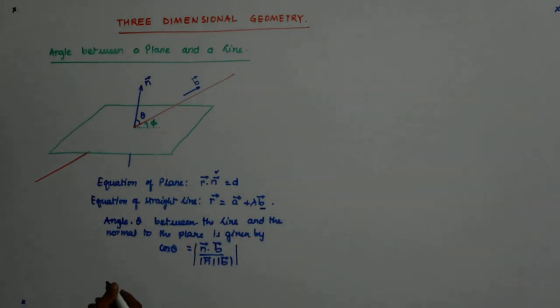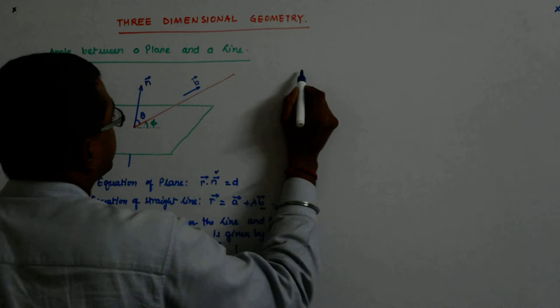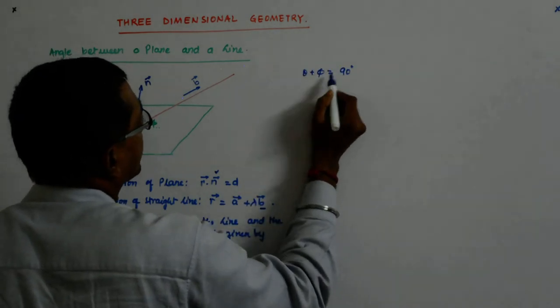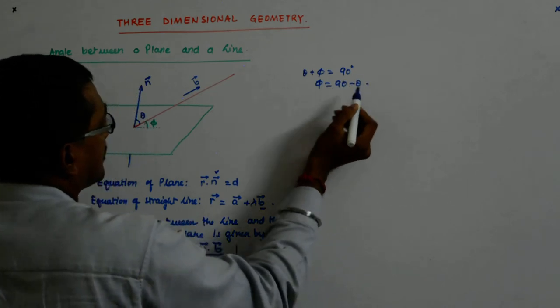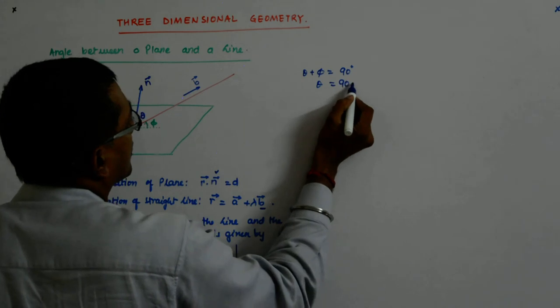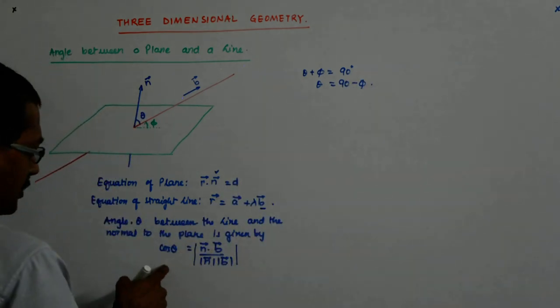Theta plus phi is 90 degree. They are complementary. So, theta plus phi is equal to 90 degree. So, phi is equal to 90 minus theta. Or I will say theta is equal to 90 minus phi.